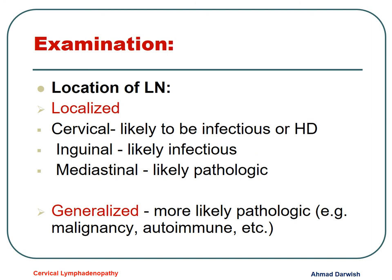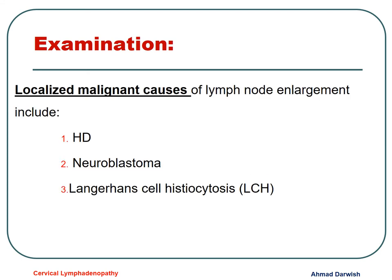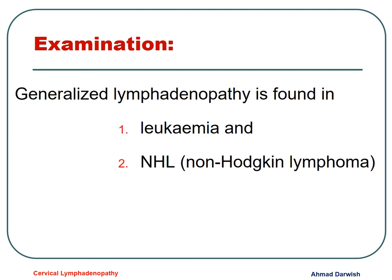Localized cervical lymph nodes are usually either infection or Hodgkin disease; inguinal is usually infection; mediastinal is usually pathologic. Generalized lymphadenopathy is more likely to be pathologic rather than infectious. Localized malignant causes include Hodgkin disease, neuroblastoma, histiocytosis, and rhabdomyosarcoma. For generalized involvement, it could be leukemia or non-Hodgkin lymphoma.